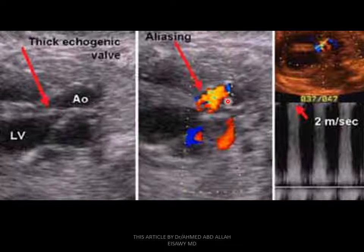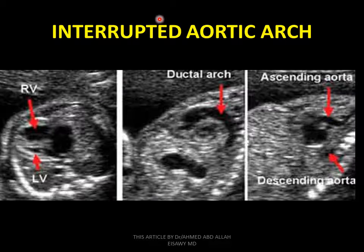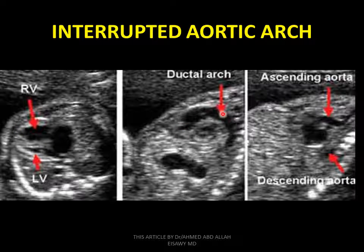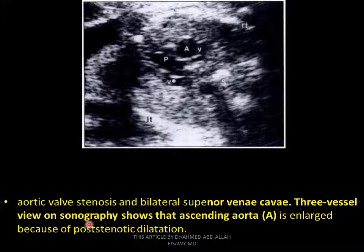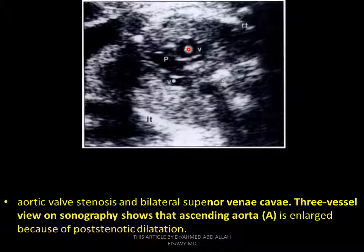This is the left ventricle, right ventricle, ductal arch, and ascending aorta. Interrupted aortic arch: hypoplastic or interrupted. Aortic valve stenosis with bilateral superior vena cava. Three-vessel view on sonography shows the ascending aorta enlarged due to post-stenotic dilatation. Dilated ascending aorta — post-stenotic dilatation — this is a result of aortic stenosis.